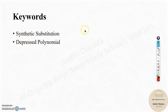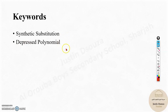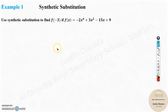Synthetic substitution, which we have already come across, will be used to solve the remainder theorem. Depressed polynomial is a term we will come across in the factor theorem, and I will explain it there. Now let's go to the first example.